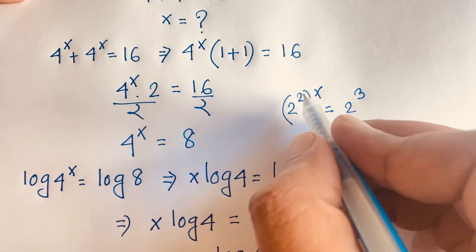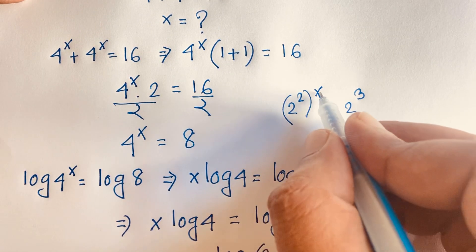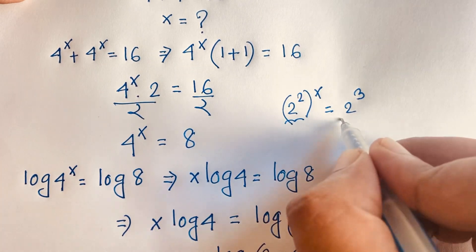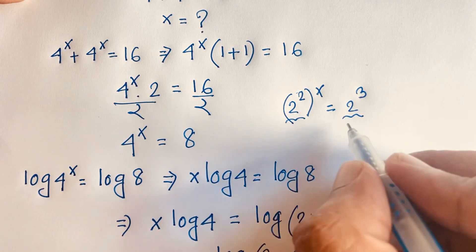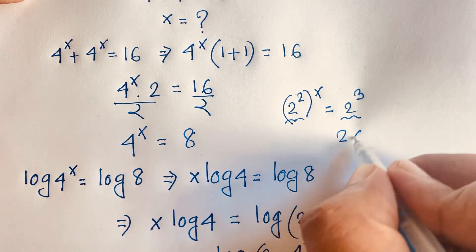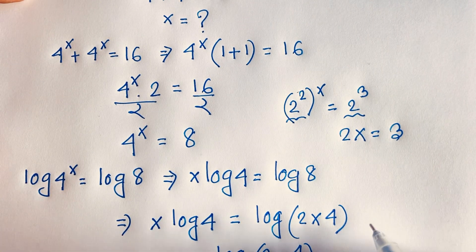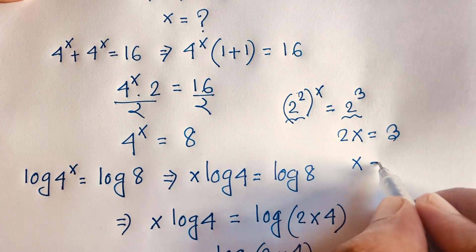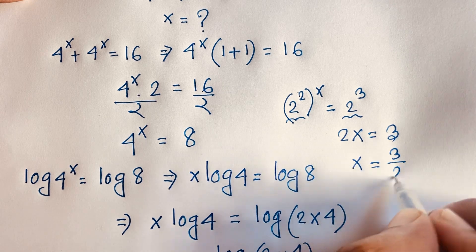According to the exponential law, since the bases are the same, we set the exponents equal: 2x equals 3. Dividing both sides by 2, we find x equals 3/2. This is our final answer.